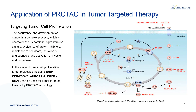The occurrence and development of cancer is a complex process, characterized by continuous proliferation signals, avoidance of growth inhibitors, resistance to cell death, induction of angiogenesis, and activation of invasion and metastasis. Studies have shown that some overexpressed and/or over-activated proteins play a key role in tumorigenesis and are potential targets for cancer therapy. PROTAC can act on these important proteins and play a role in targeted therapy of cancer.